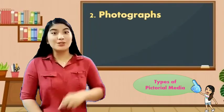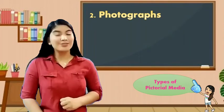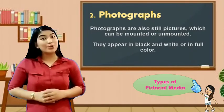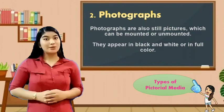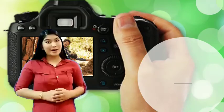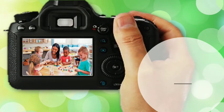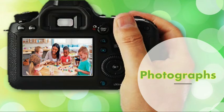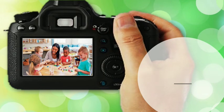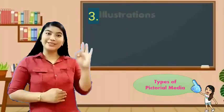Now, let us move on to the second type of pictorial media, which are photographs. Photographs are also still pictures, which can be mounted or unmounted. They appear in black and white or in full color. As you can see, these are examples of photographs. In the choice of photographs, teachers should choose those that suggest motion or candid shots, as they are more interesting and life-like.